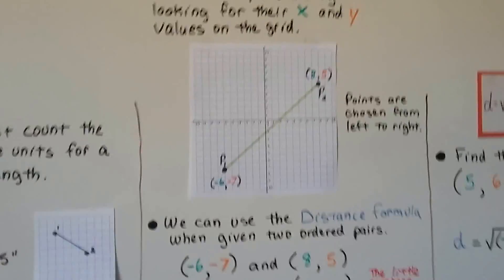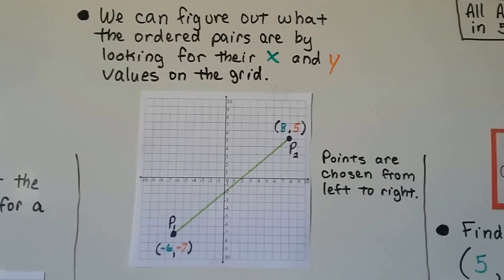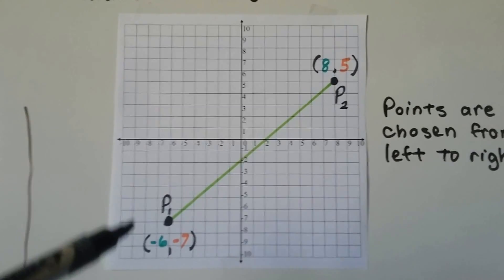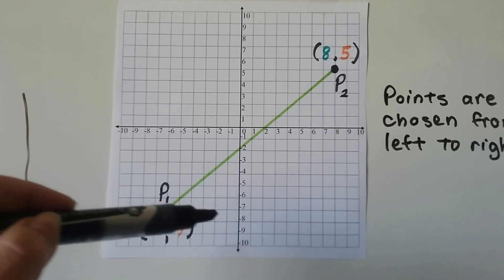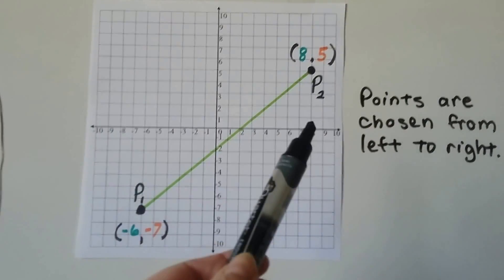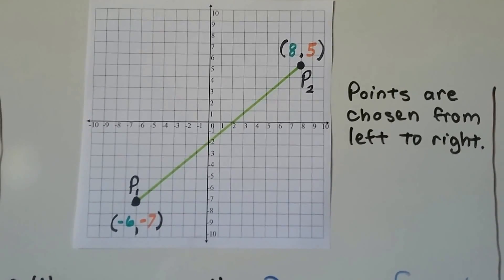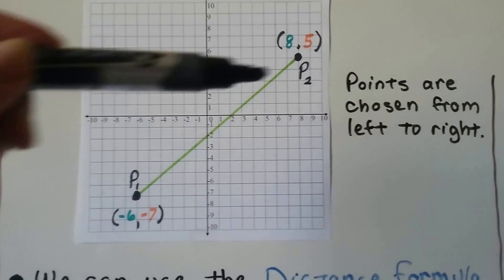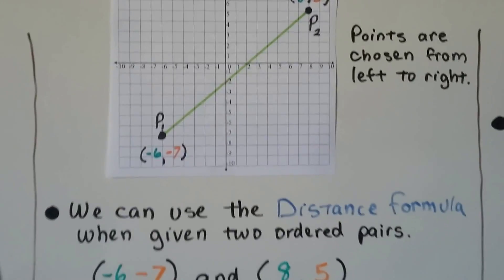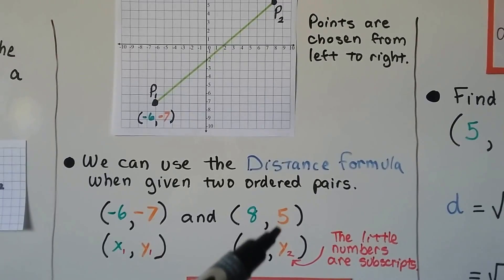The textbook wants you to learn this. We can figure out what ordered pairs are by looking at their x and y values on the grid. This point is negative 6 and negative 7 — that's our first ordered pair. This is an 8 for x and a 5 for y — that's our second ordered pair. Remember, the points are chosen from left to right, even if the line is falling.